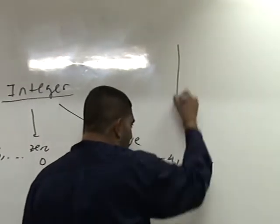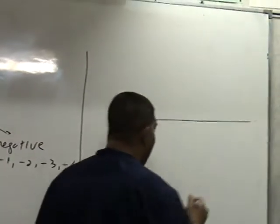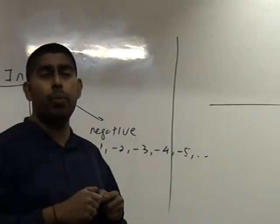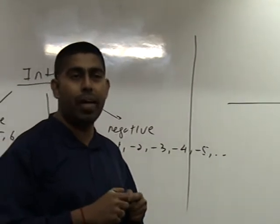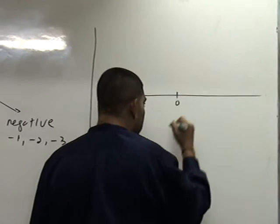If we take a number line, garis nombor, number line. So what is a number line? A line that has numbers. That is a number line. Alright? So here is zero.